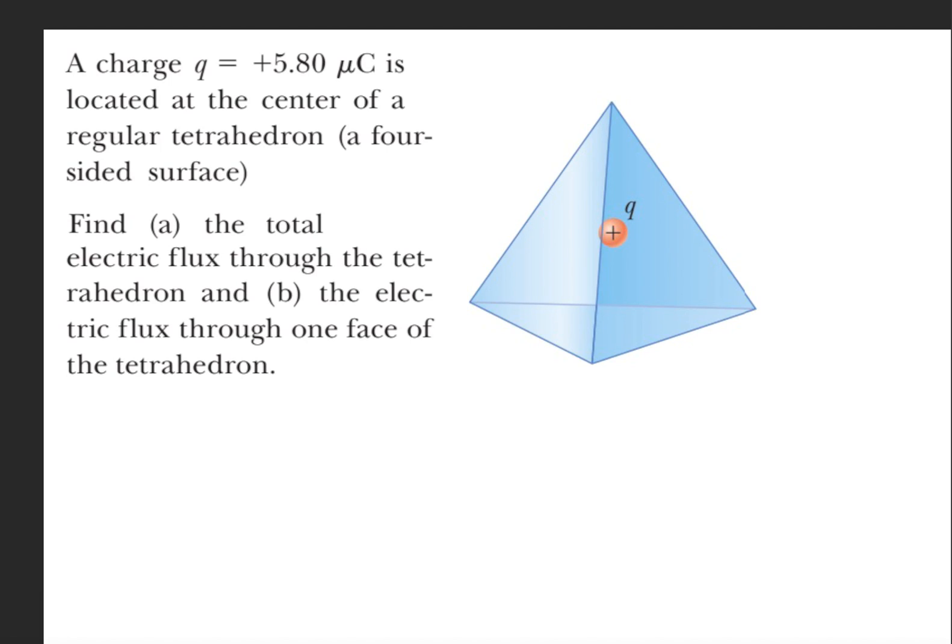In order to find the total electric flux through the tetrahedron, we have to use this formula right here. To find the total flux in any enclosed surface, we use this formula: the enclosed charge divided by epsilon naught, and we sum all the charges inside the surface.